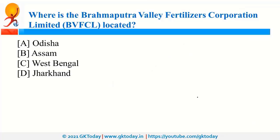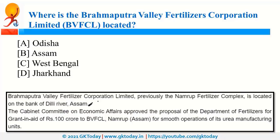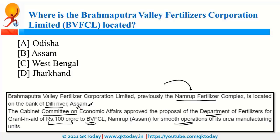The Brahmaputra Valley Fertilizers Corporation Limited is located in Assam, previously named Namrup Fertilizer Complex, situated on the bank of the Dhili River. It was recently in news because the Cabinet Committee on Economic Affairs (CCEA), which is headed by the Prime Minister, approved a proposal by the Department of Fertilizers for an aid of 100 crore rupees to BVFCL so that it can continue its urea manufacturing operations.